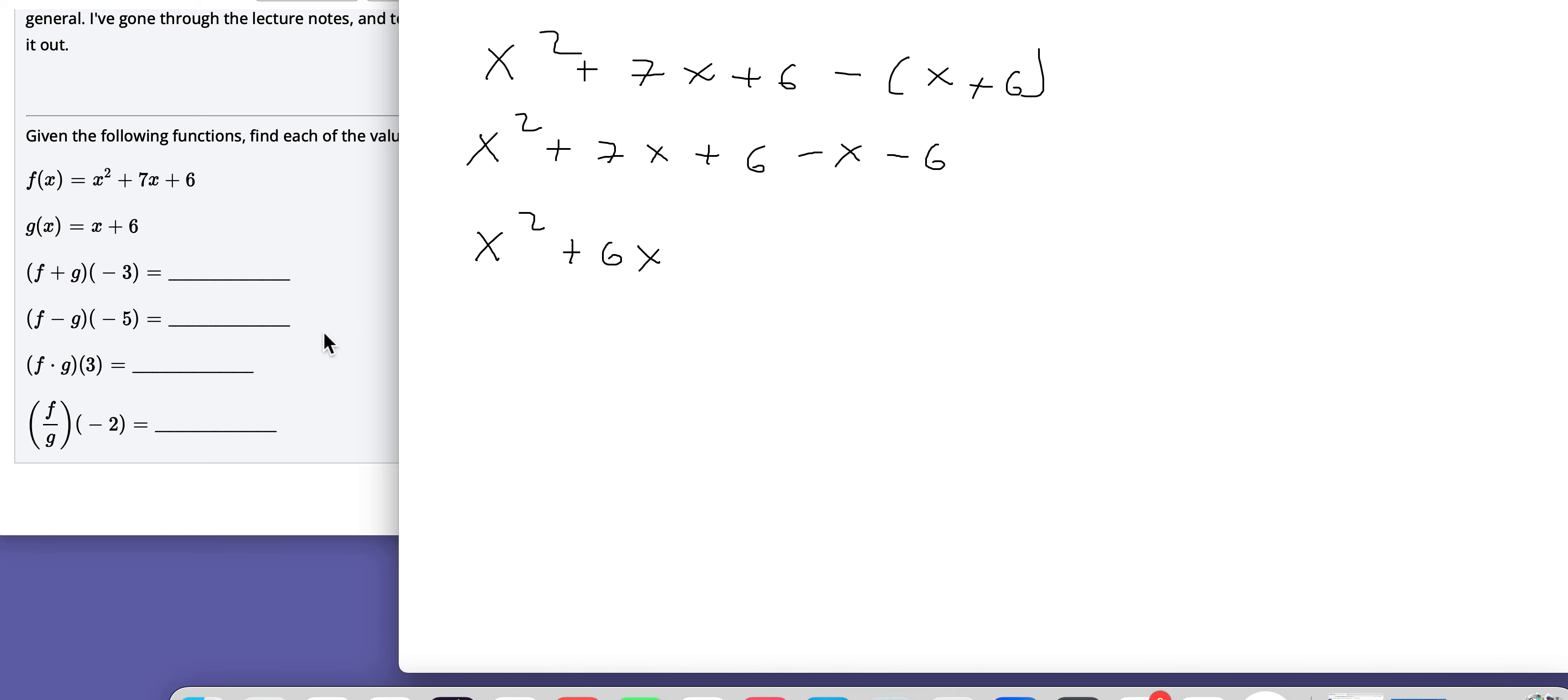And then if I evaluate that at negative 5 here, then I get negative 5 squared plus 6 times negative 5. And that is 25 minus 30 or negative 5.